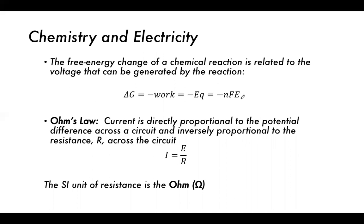Ohm's Law: current I is directly proportional to potential difference and inversely proportional to resistance R. So I = E/R, where E is potential and R is resistance. The unit of resistance is the ohm (Ω). As resistance increases with a static potential, the current decreases — for example, if resistance is 4 Ω, current is proportional to 1/4; if resistance doubles to 8 Ω, current halves.